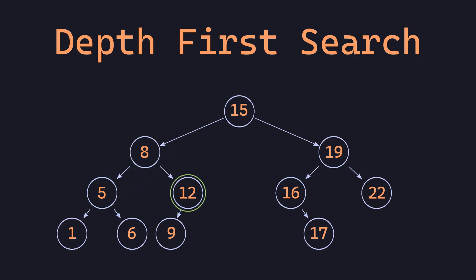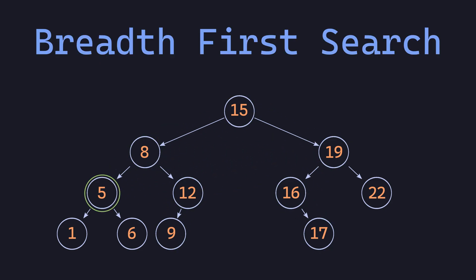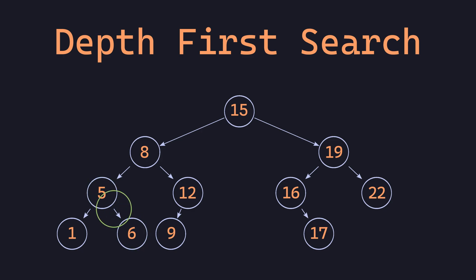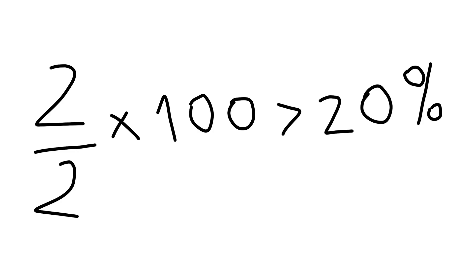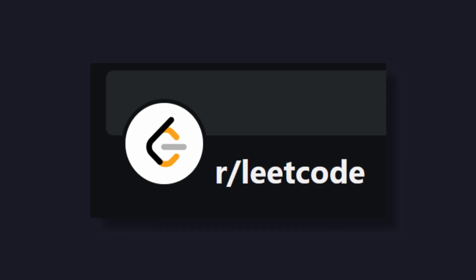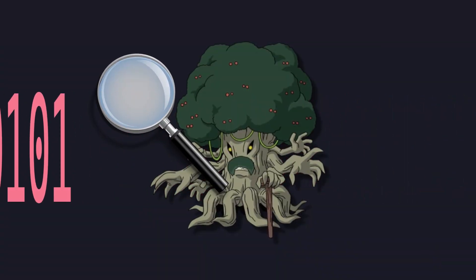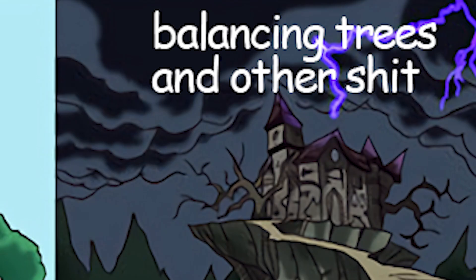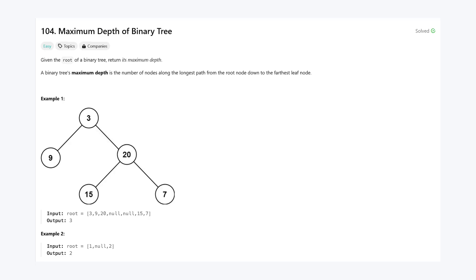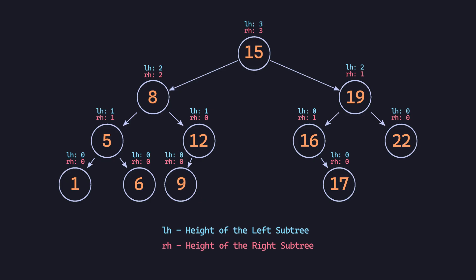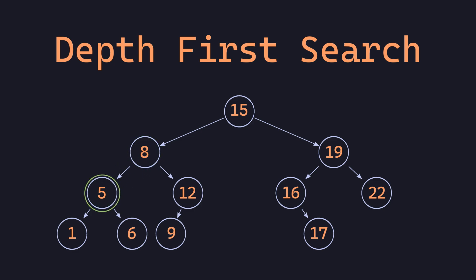DFS and BFS represent two different ways of traversing through a tree. With DFS, you start from the root and explore as far as possible along each branch before backtracking. With BFS, you start from the root and explore all neighboring nodes at the current depth before moving onto the next depth level. Based on my experience, both times I got asked a tree question it was related to DFS. So if you're just starting, don't worry about balancing trees — just learn DFS and BFS and you should be fine. A good example is the classic maximum depth of a binary tree, where you use DFS to calculate the maximum depth by traversing as far as possible along each branch and comparing the depth of the left and right subtrees.